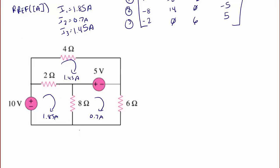Next, let's label our branch currents. The branch current for the 2 ohm resistor: I have 1.85 coming into this node, but I have 1.45 leaving that node, so that gives me a net 0.4 amps pointing to the right through the 2 ohm resistor. Now for the 8 ohm resistor, at this bottom node I have 1.85 leaving and 0.7 coming in, so I need 1.15 amps to come in — that's 1.15 amps pointing down through the 8 ohm resistor. The 6 ohm resistor: the mesh current is the branch current, so that current is 0.7 amps. For this 5 volt source, at this node I have 1.45 coming in, 0.7 going out, so I have an additional 0.75 amps going out to the left of the 5 volt source. For the 4 ohm resistor, the mesh current is the branch current, so that's 1.45 amps. And for the 10 volt source, the mesh current is the branch current, so that's 1.85 amps.